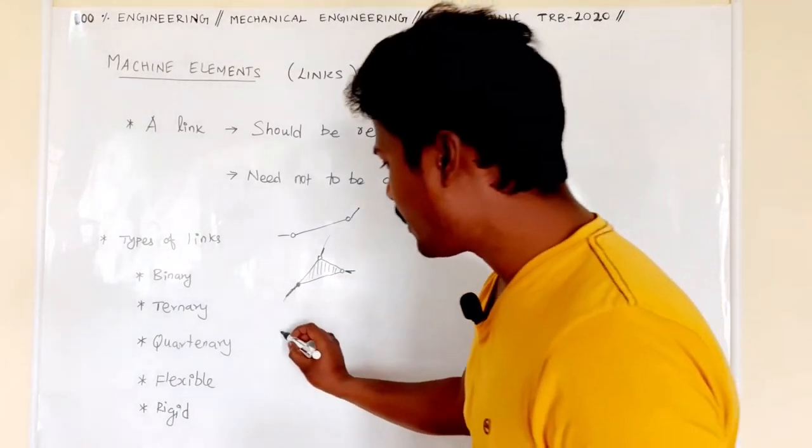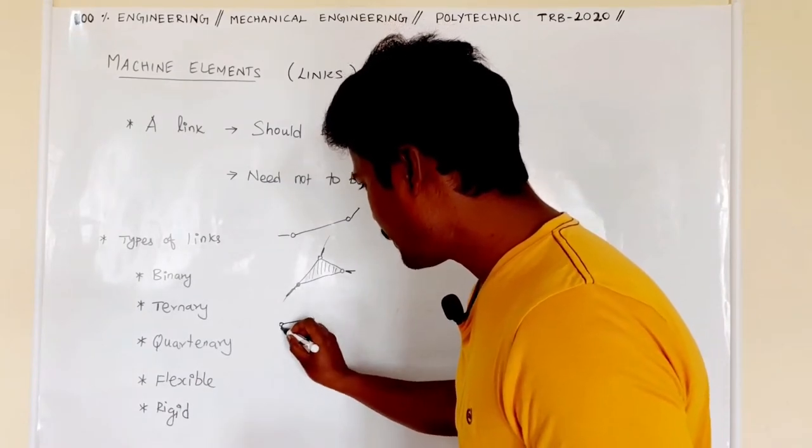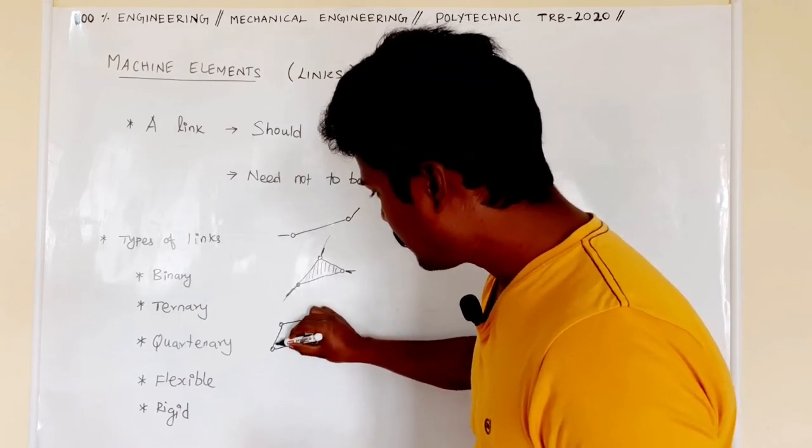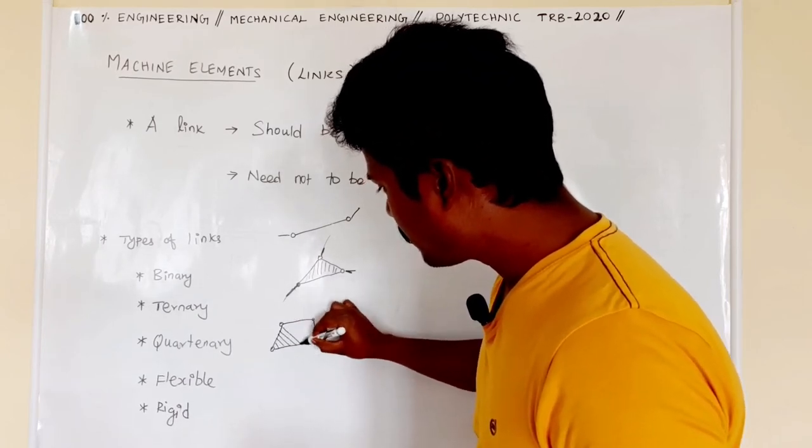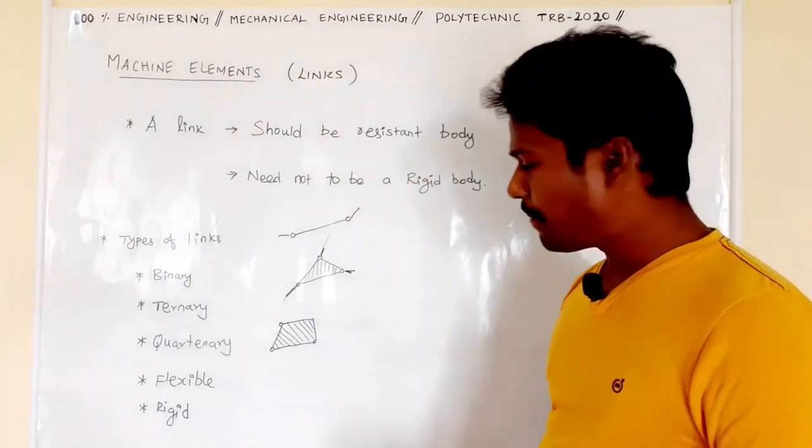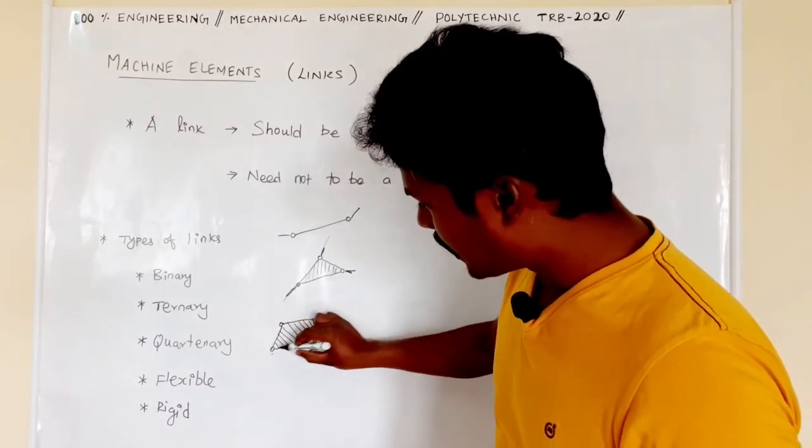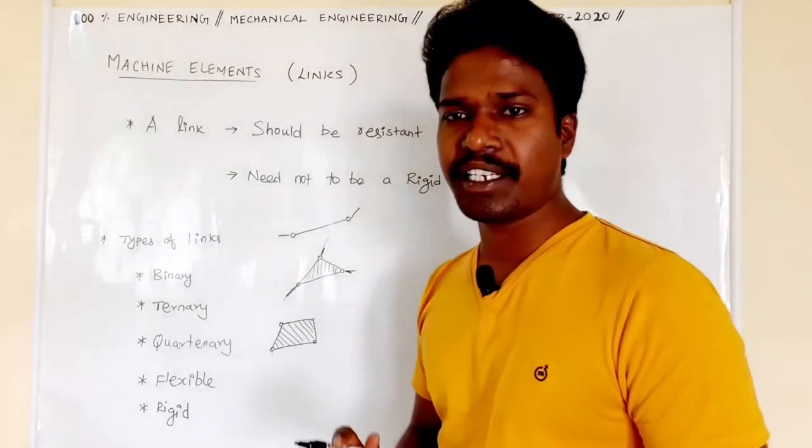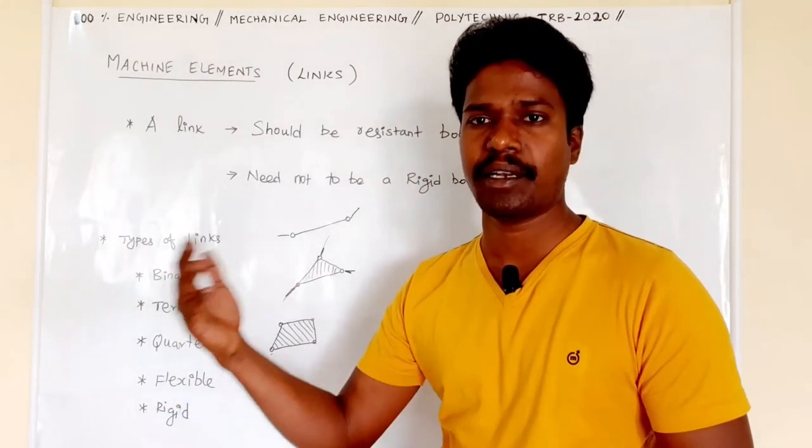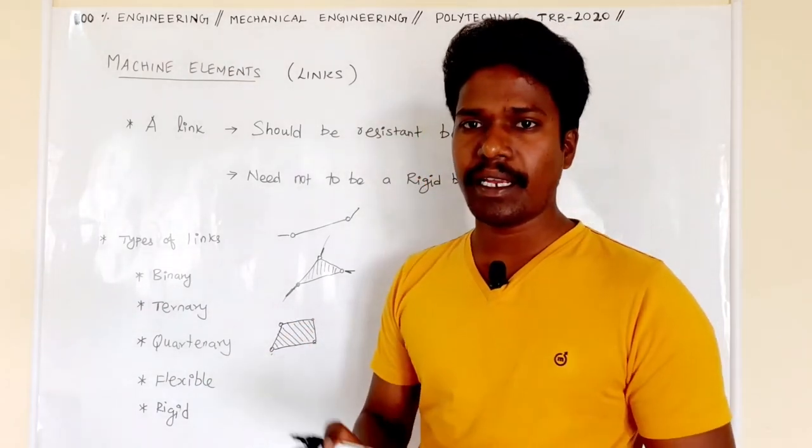Quaternary link is here. On this link, we can add one, two, three, four - four additional links. On the link, we can add four machine elements to join. So this is called a quaternary link.